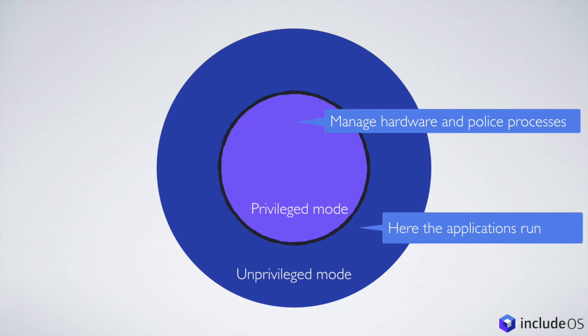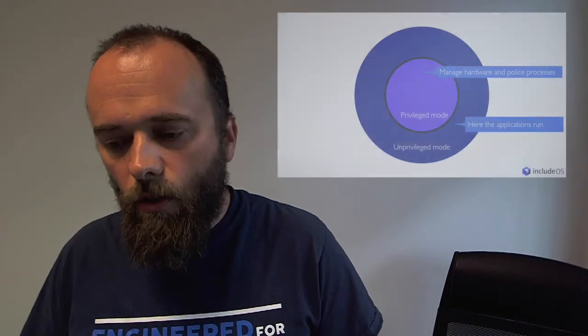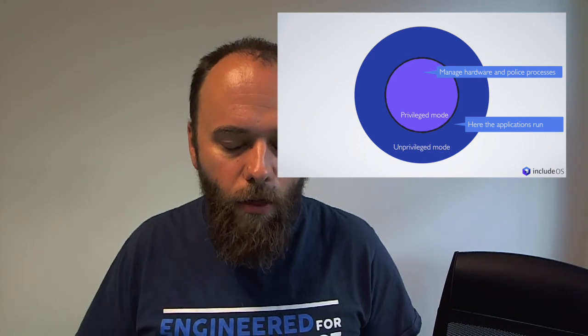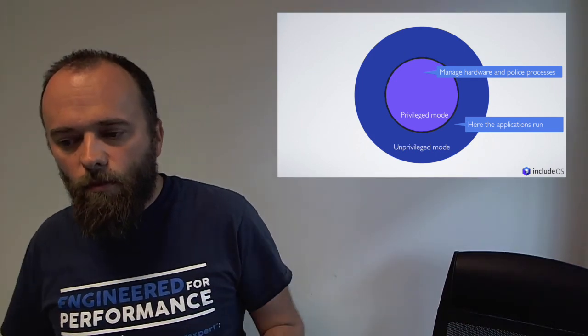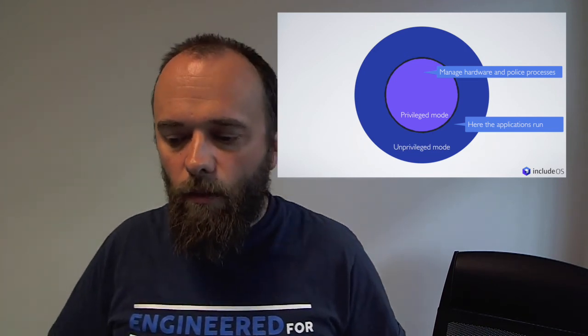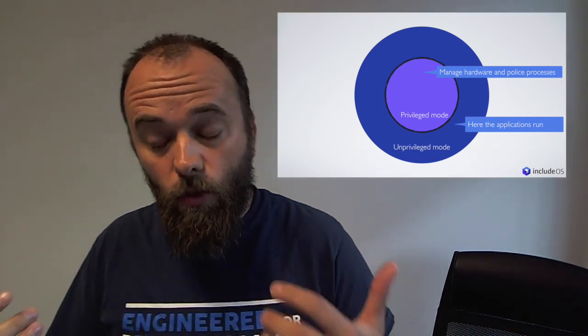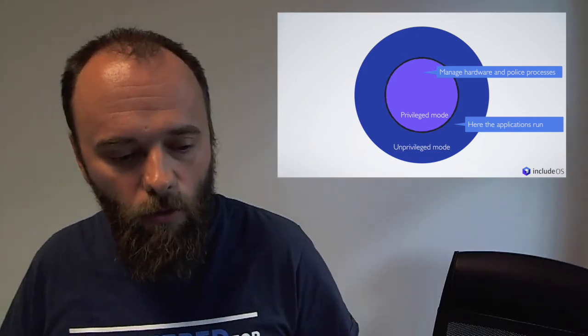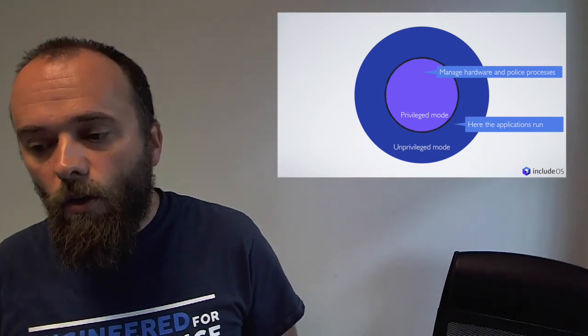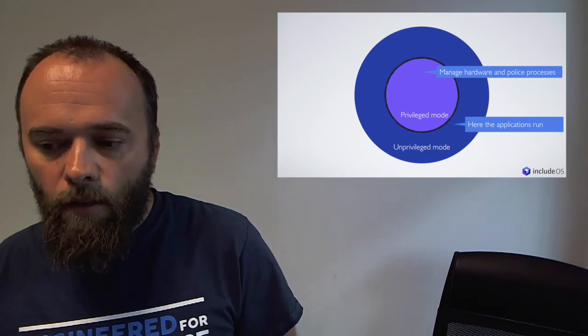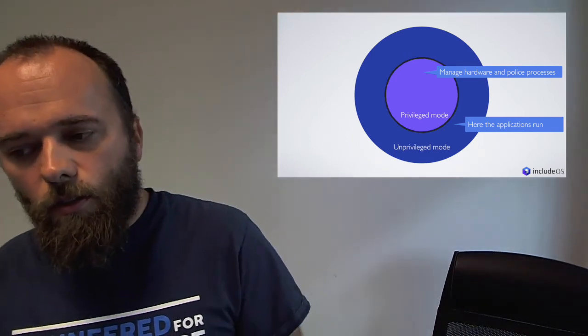Outside you have the unprivileged mode — that's where the applications run. Because the operating system kernel needs to police the processes, it needs to run at a higher privilege level. But applications need to talk to the kernel as well, and they talk to it through a layer of security, which is a barrier. If you're doing any low-level programming, the most expensive thing you can do is talk to the kernel. Every time you allocate memory or send a packet on the network, you need to do a context switch.